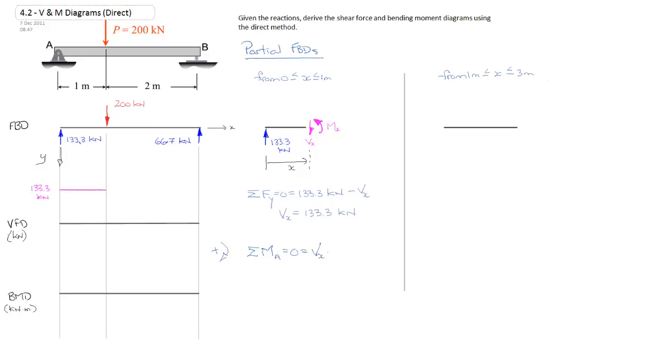So m at x is equal to v at x times x. However, I'm going to substitute in the 133.3 kilonewtons for v at x that we had from the previous equation. So we end up with 133.3 x. And that's the equation of the line.